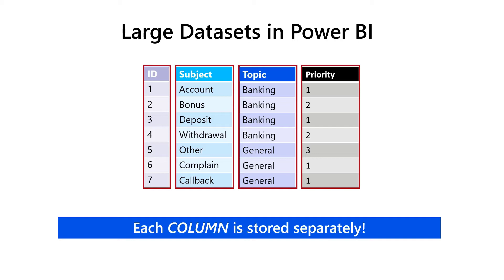With all these points in mind, it's fair to say that VertiPaq excels in vertical scanning, while it performs much worse when it needs to retrieve data from multiple different columns. So, what would be the most desirable data structure for VertiPaq, and consequently Power BI?